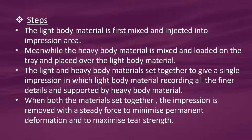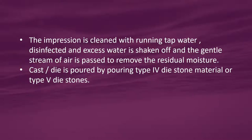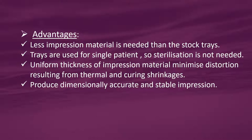When both materials set together, the impression is removed with a steady force to minimize permanent deformation and to maximize tear strength. The impression is cleaned with running tap water, disinfected, and excess water is shaken off, with a gentle stream of air passed to remove residual moisture. A cast or die is poured using type 4 or type 5 die stone material.